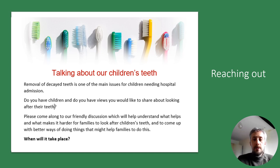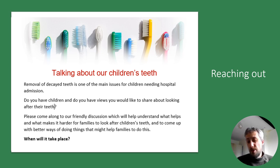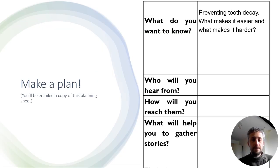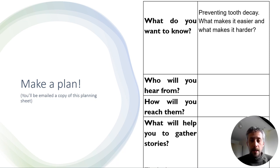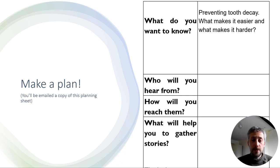If you're making a poster or information flyer, we said we would be providing a template on the website — there's a link at the end of this presentation — which you could use to give people the right information before they take part. We also talked about how it's important to plan what you're doing. You don't have to use a table, but it can be helpful. A table can help you record what you want to know — in most cases, something around preventing tooth decay and what makes it easier and harder — along with who you're going to hear from, how you'll reach them, and what will help you gather stories.